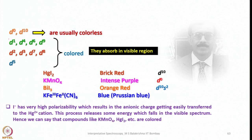The d2/d3/d7/d8 group share similarities and their spectra look almost identical except for some anomalies. These compounds are colored, while d5 compounds are a little pale-colored, especially when they are tetrahedral. We also have homoleptic complexes having centrosymmetry. Now let us look into HgI₂.